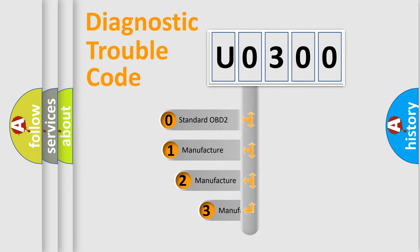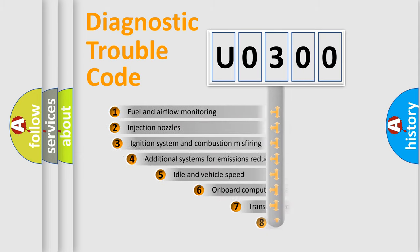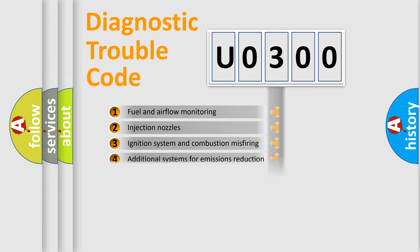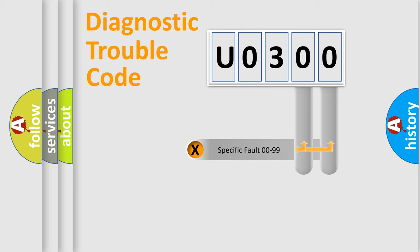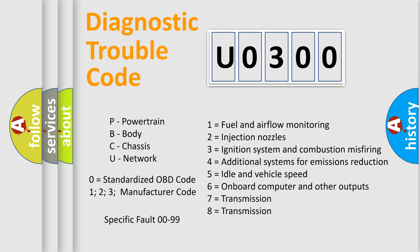If the second character is expressed as zero, it is a standardized error. In the case of numbers 1, 2, or 3, it is a more specific expression of the car-specific error. The third character specifies a subset of errors. This distribution is valid only for the standardized DTC code, and only the last two characters define the specific fault of the group. Such a division is valid only if the second character is expressed by the number zero.